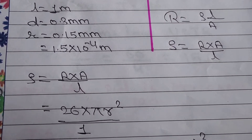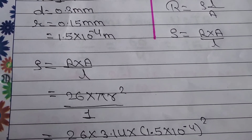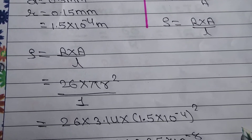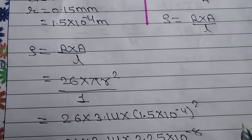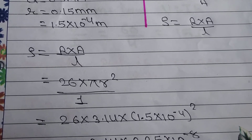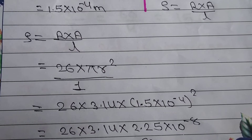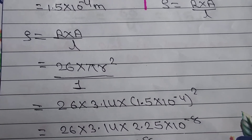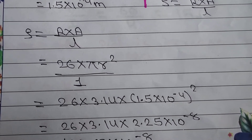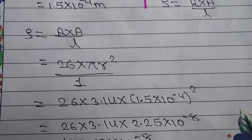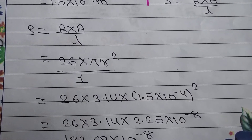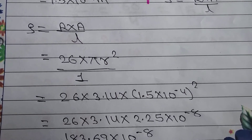So, resistivity rho equals R into pi r squared upon L. Putting values: R is 26, pi is 3.14, radius is 1.5 into 10 to the power minus 4, and L is 1 meter. Squaring the radius: 1.5 squared is 2.25, and 10 to the power minus 4 squared is 10 to the power minus 8. So we have 26 into 3.14 into 2.25 into 10 to the power minus 8.